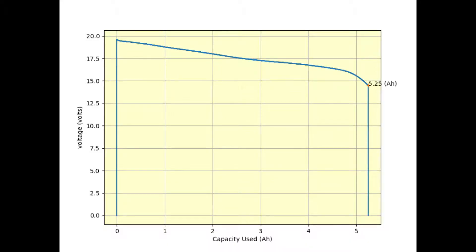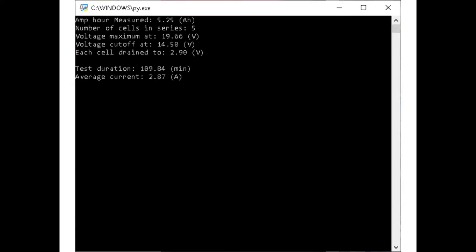The capacity measured to be 5.25 amp hour. It's far short of expected 6 amp hour capacity. And here's a detailed view of the test. Each cell drained to 2.9 volts to prevent the cell from over-draining. The test duration is 109 minutes, and the average drain current is at 2.87 amps. That's well within the limit of the battery.